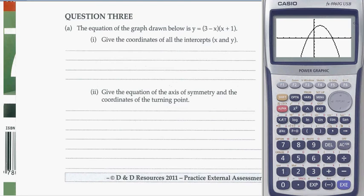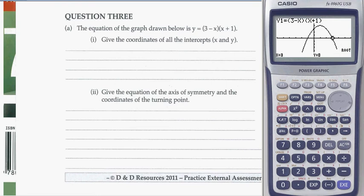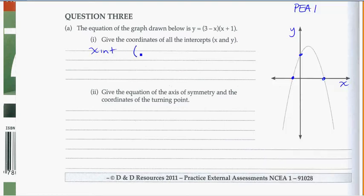It's really important if you're going to use the calculator that you can actually see all the intercepts and points you're looking for. To find the x-intercepts, hit G-solve. Remember, x-intercepts are the roots. We see the first root is at negative 1.